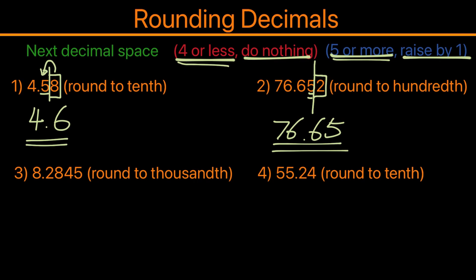Now the third example here: 8.2845, and we're rounding to the thousandth value. So here, this is tenth, hundredth, thousandth. So we'll look at the next decimal space. This case is five, and five falls under the five or more category, so we need to raise by one. So we will rewrite it as 8.285.